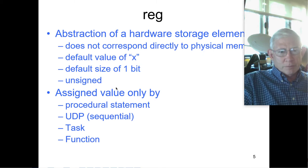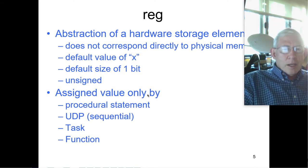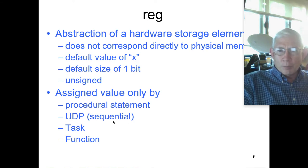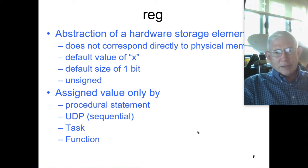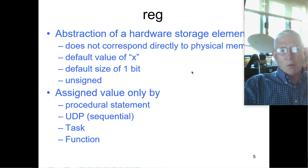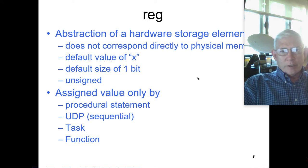Registers are unsigned. The default size of a register is one bit, but oftentimes we'll define them as vectors. The way you get a register assigned a value is generally in a procedural statement. If you have a user-defined primitive that's a sequential primitive, that's another way. You can assign it with a task or a function. You can assign a register in an always block or in an initial block. Those are totally acceptable.